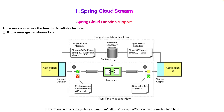So why do we need Function here? We already have the supplier to produce messages and the consumer. If you understand the concept of a transformer or translator from Enterprise Integration Patterns, you will understand that we can use Function for message transformations — to transform the payload of a message from one type to another type.